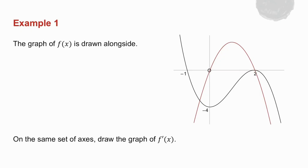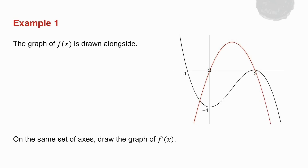This is a cubic graph with a negative a value, so the derivative is going to be a parabola with arms going down. And there's the graph of the derivative of the original graph.